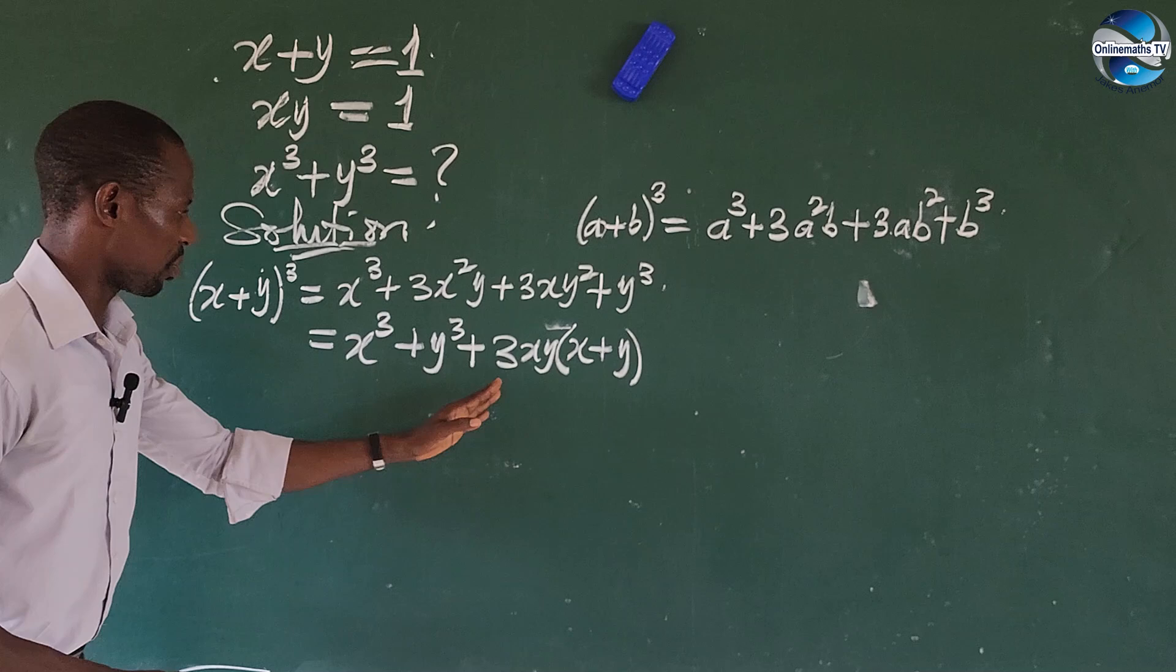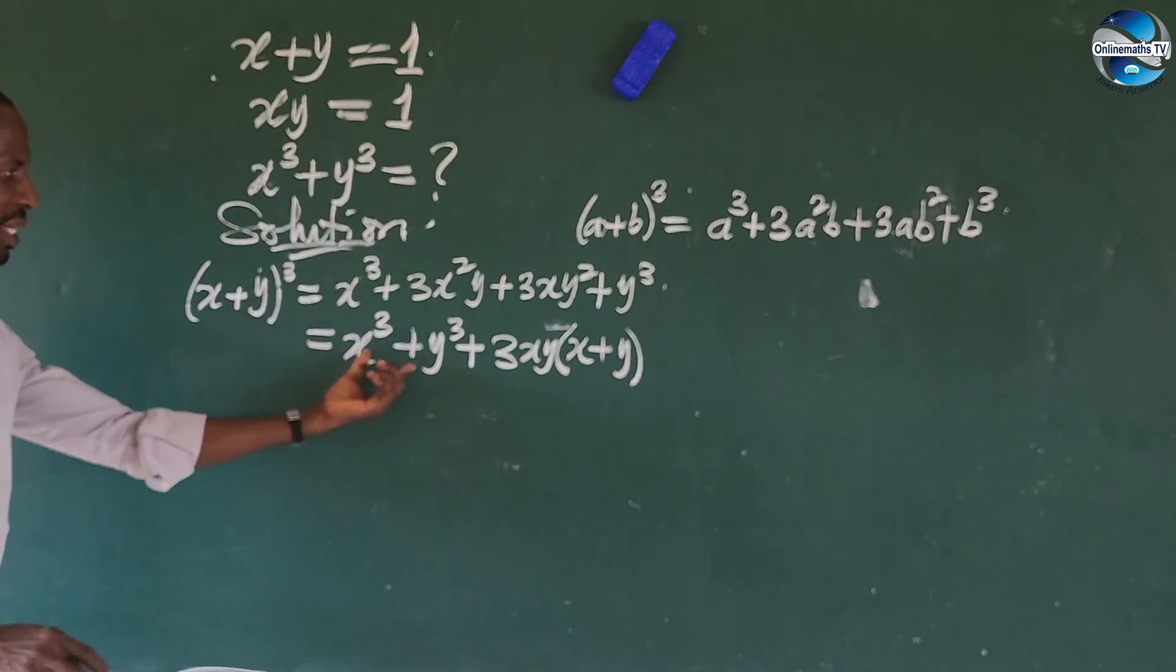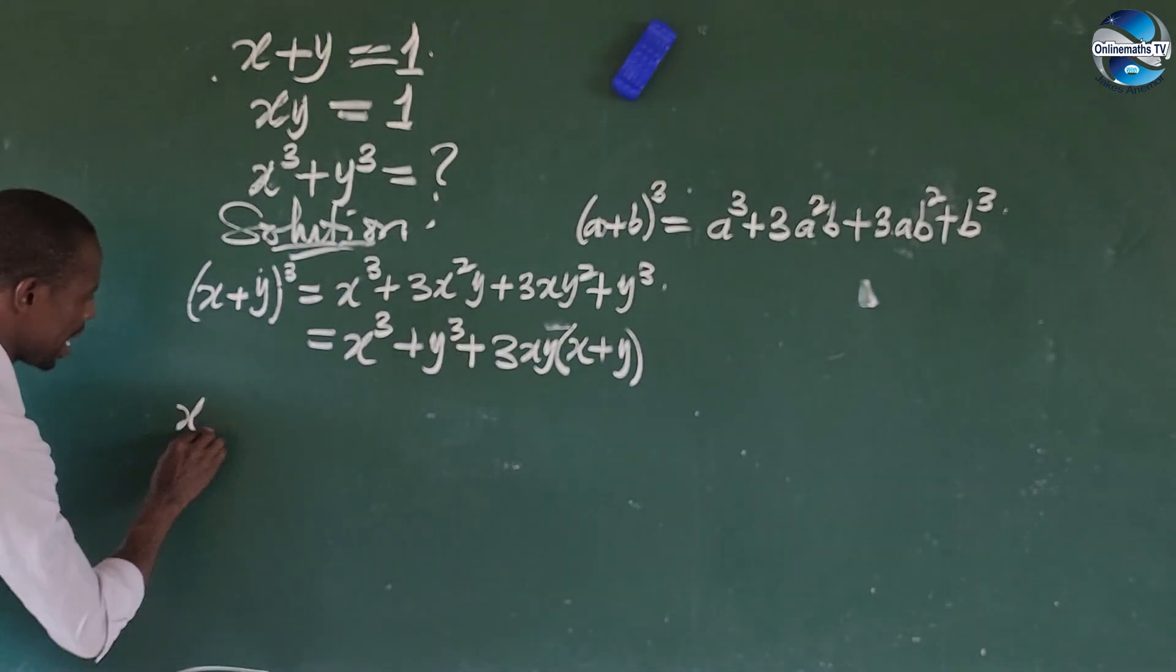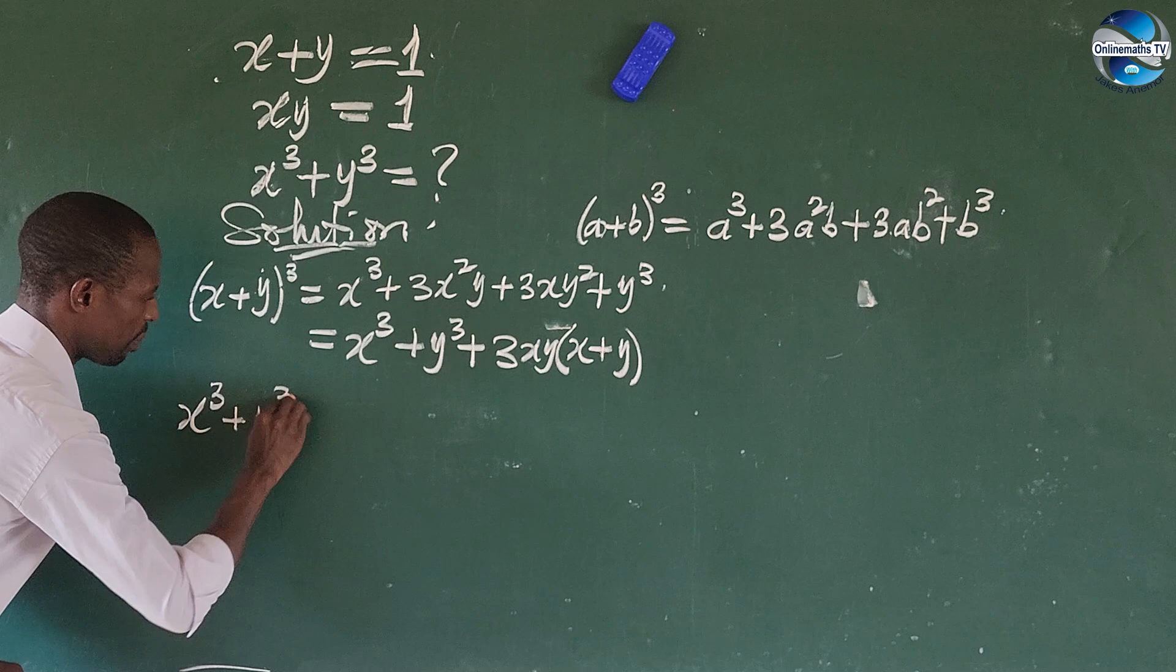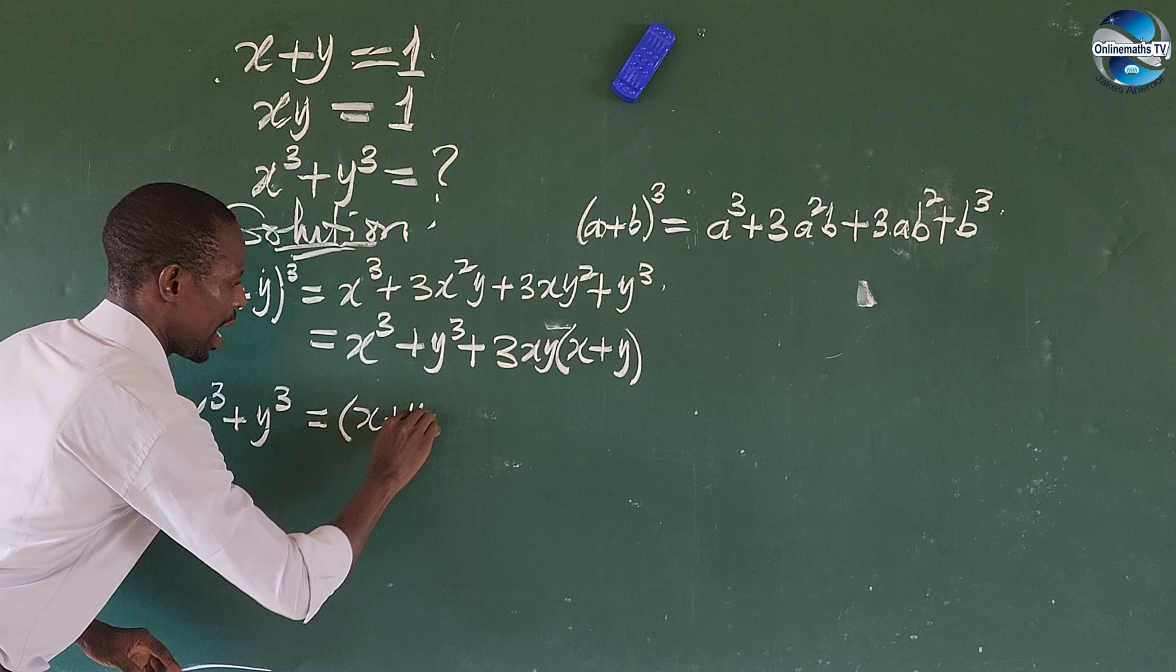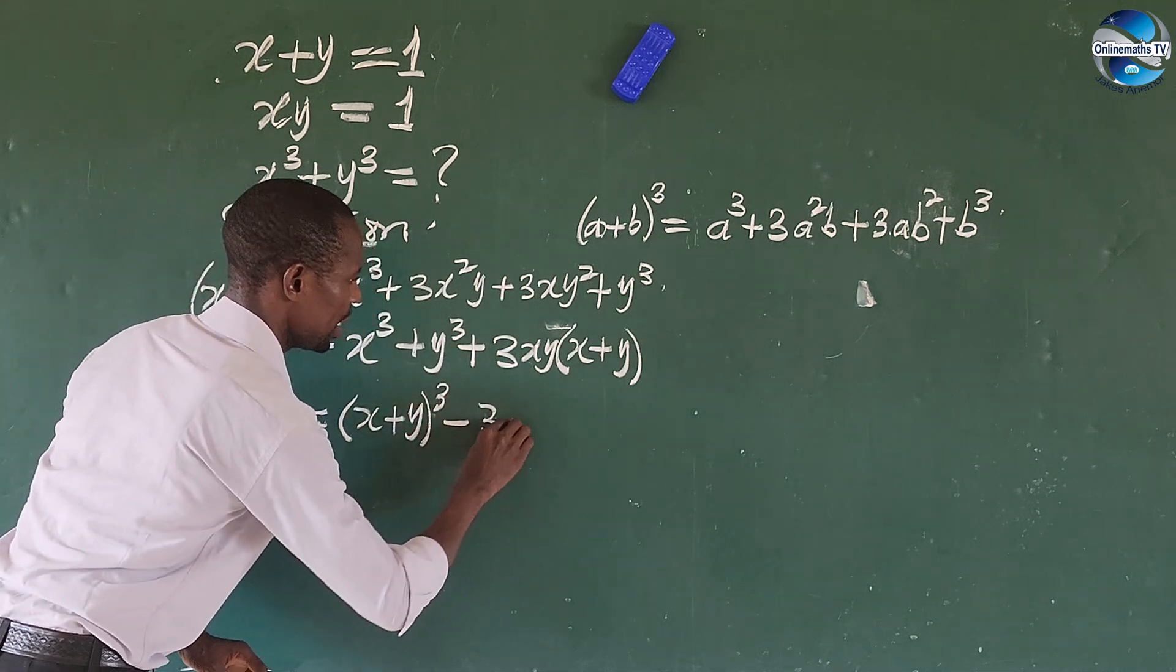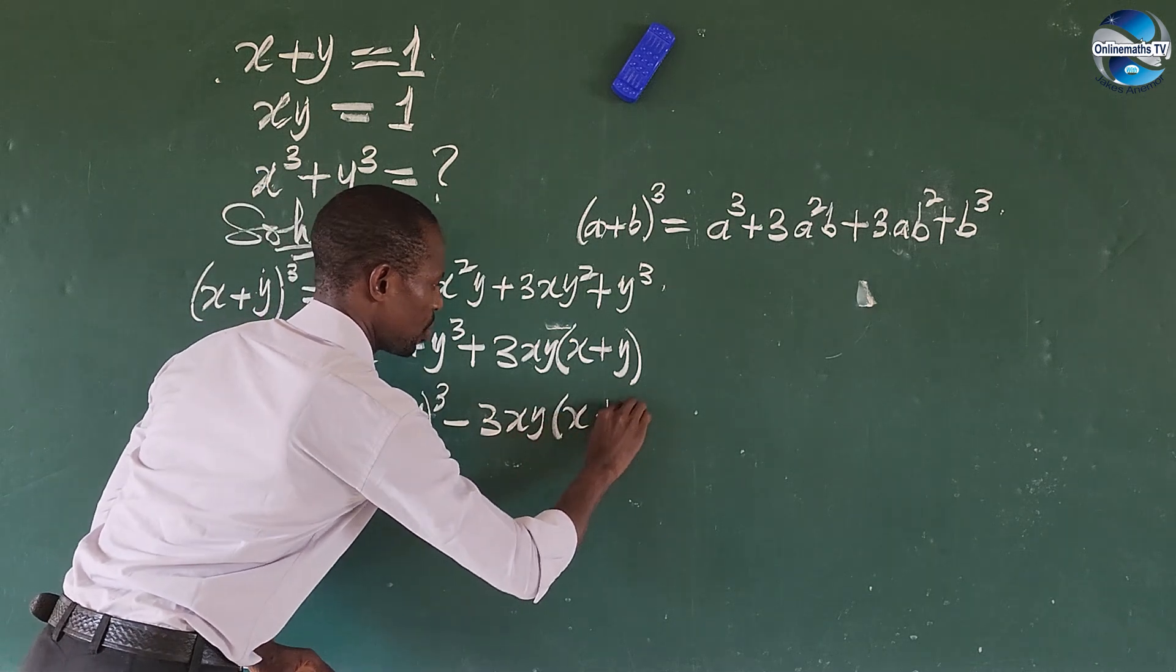Okay, so from here what we do, we can move the whole of this to this side so that this stands on its own. So rearranging, we can have this to be x³ plus y³ equal to (x+y)³ minus 3xy(x+y).